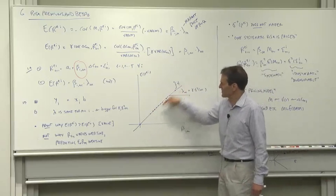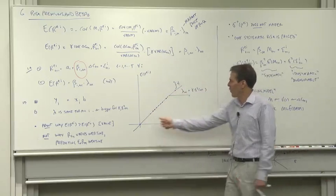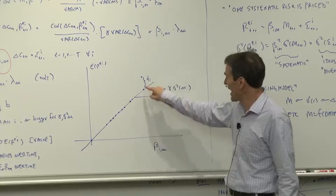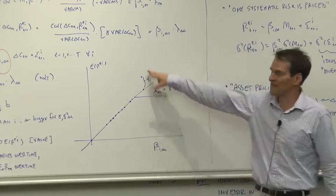Lambda is the slope coefficient in this relationship. When you get a higher beta, that tells you how much more expected return you have to pay. And alpha is what we call the deviation from the relationship.